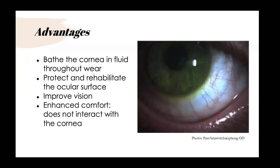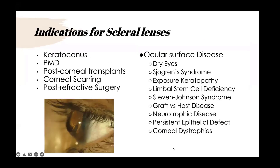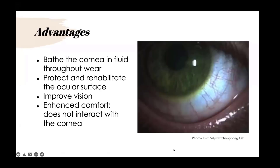The well-known advantages of scleral lenses are that they bathe the cornea in fluid throughout wear, allowing the ocular surface to be protected and helping rehabilitate the surface in many ocular surface diseases. Improving vision is a bonus, but the main goal is protecting the cornea and helping rehabilitate it while enhancing vision. Because this lens doesn't touch the cornea and rests on the sclera, patients get excellent comfort throughout the day.